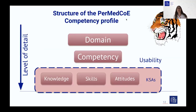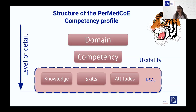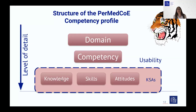When talking about the competency profile of PerMedCoE, the competencies are at the middle level — usable as a shared currency — and they are grouped in several domains above the competency level. For example, we have computing competencies and computational personalized medicine competencies that are more on the life sciences part of the PerMedCoE knowledge base. We increase the level of detail of each competency by defining knowledge, skills, and attitudes, which allows us, when designing a training program, to define which specific skills or knowledge we need participants to develop.